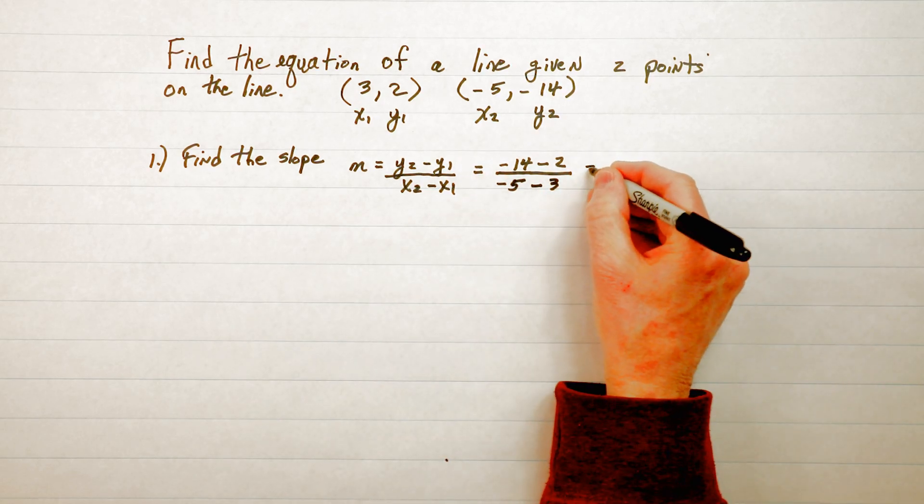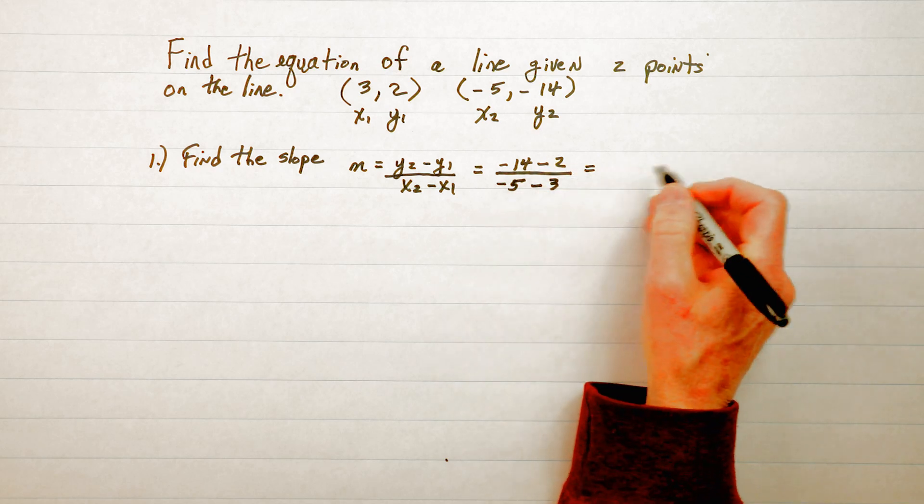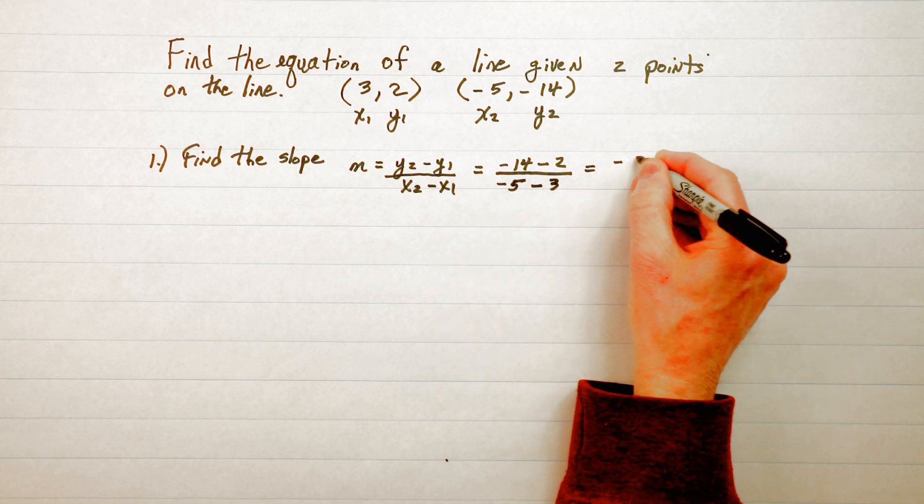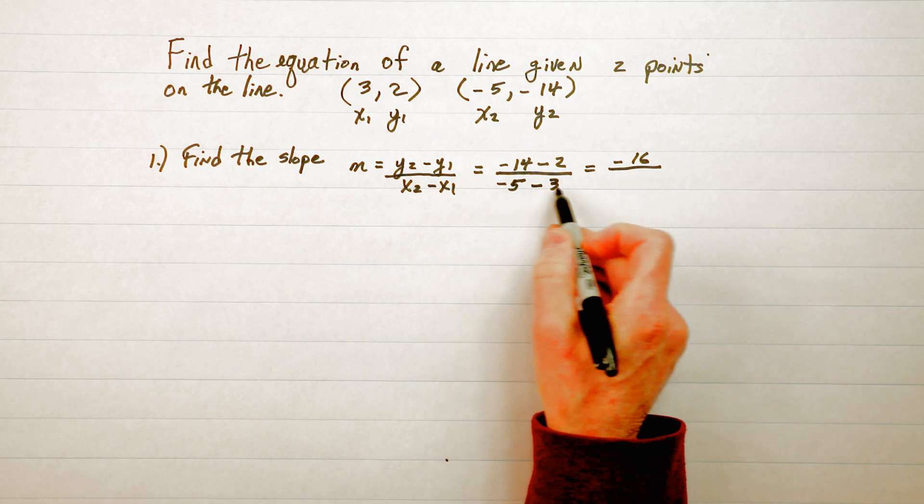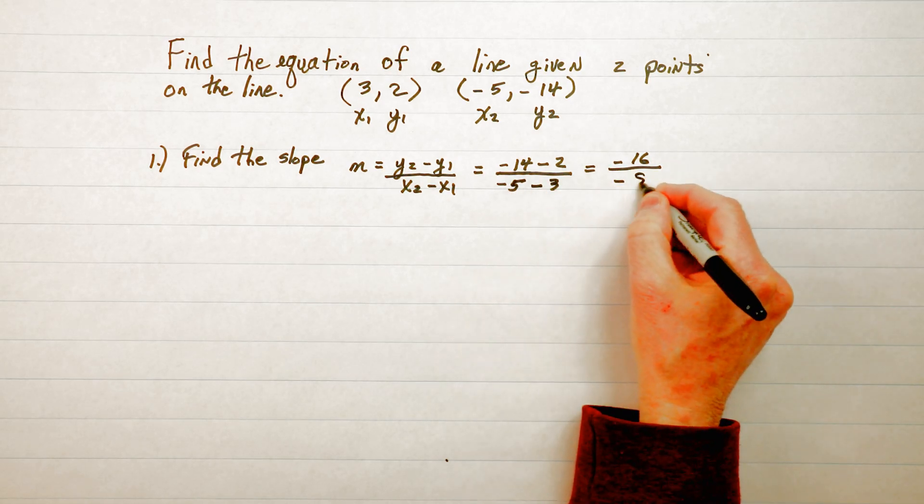Now we do the integer math here. -14 subtract 2 is -16 and -5 subtract 3 is -8.